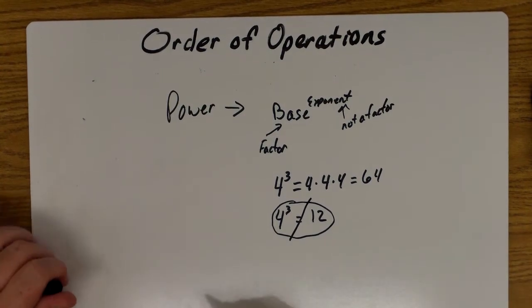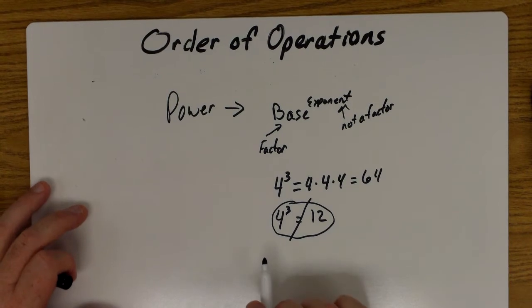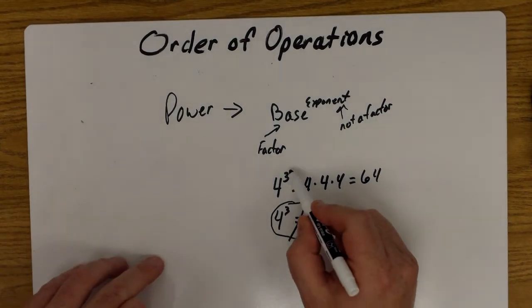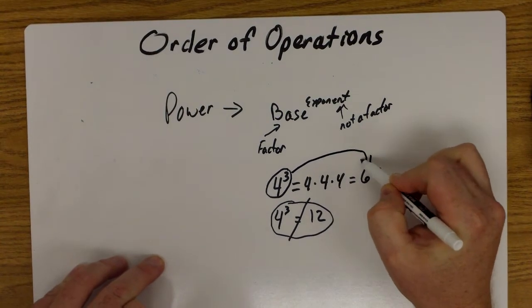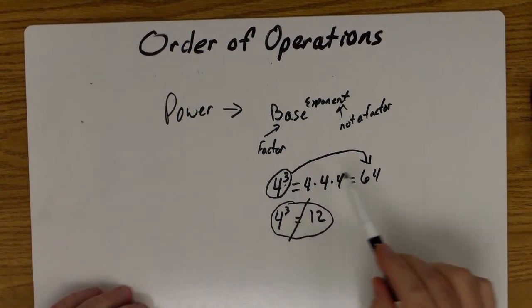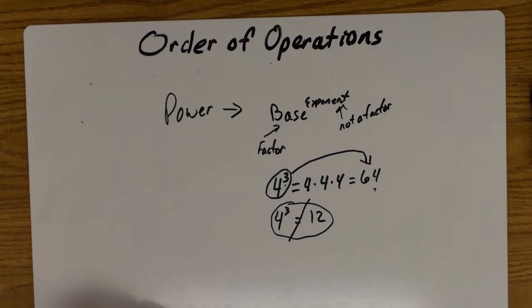Simplifying means to replace an expression like this with another equivalent expression like that. So four to the third power gets simplified as 64.